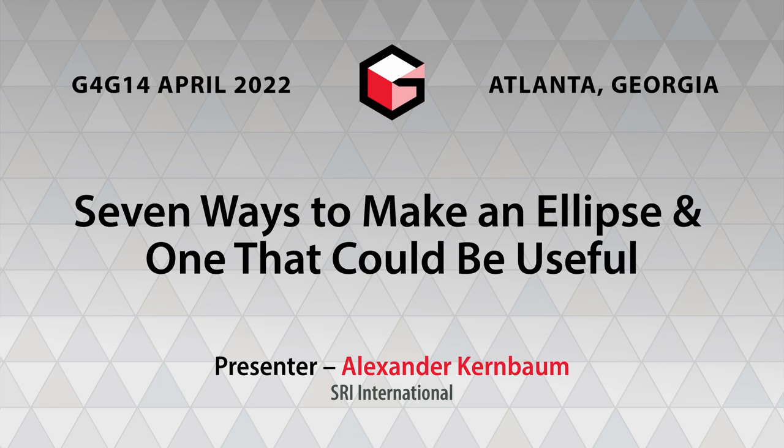I'm Alexander Kernbaum. This is my first G4G. It's great to be here. I really want to thank Bob Hearn and Scott Worthman for making me feel welcome here. Seven ways to make an ellipse, one that could be useful, six minutes. Can we do it? I think so.